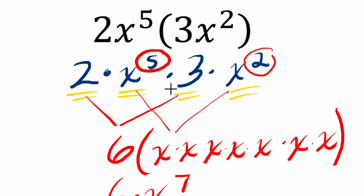So altogether, we can group them all by the associative property. We can say, oh, that's one, two, three, four, five, six, seven x's, or it's six times x to the seventh.